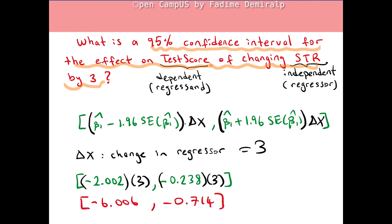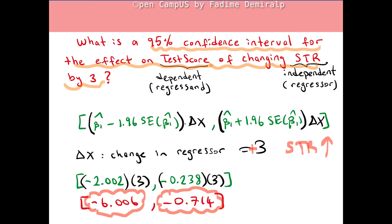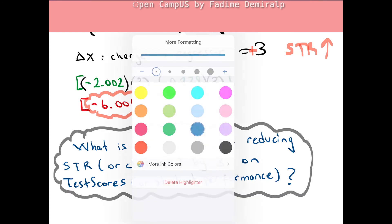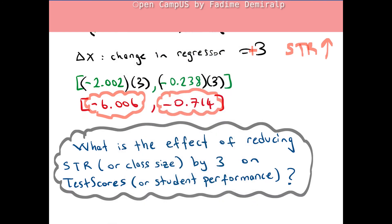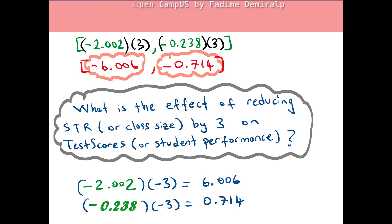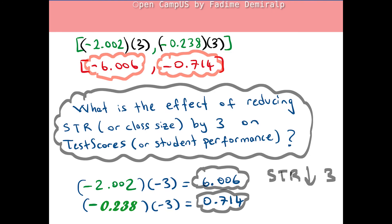The 95% confidence interval for the slope coefficient is negative 2.002 (left-hand point) and negative 0.238 (right-hand point). So, increasing student-teacher ratio — or class size — by 3 is estimated to decrease test scores by between 6.006 and 0.714 with 95% confidence. If the question were about reducing student-teacher ratio by 3, we would multiply the confidence interval endpoints by negative 3, and we would find that reducing class size by 3 is predicted to increase test scores by between 0.714 and 6.006 with a 95% confidence level.